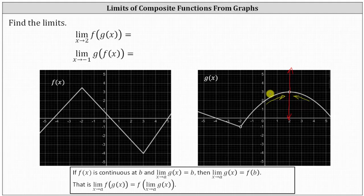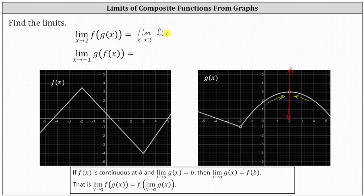Since the outputs of g(x) become the inputs for f(x), we can write the limit as x approaches two of f(g(x)) as the limit as x approaches three of the outer function f(x). And since f(x) is continuous, we can simply determine f(3).